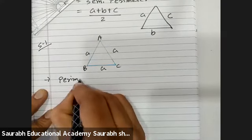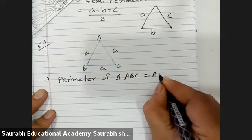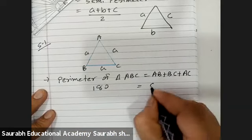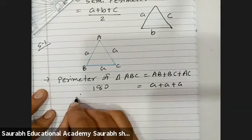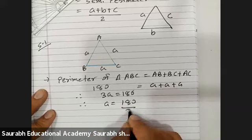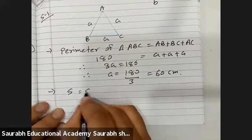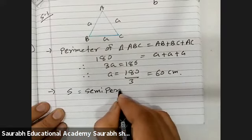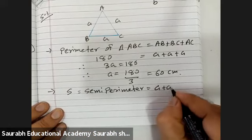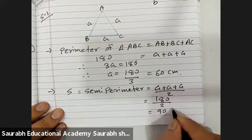Find the area of the sign board using Heron's Formula if the perimeter is 180 cm. Perimeter of triangle ABC equals A plus B plus C. Since all sides are equal, 180 equals 3A, so A equals 180 divided by 3, that is 60 centimetres. Now, semi-perimeter S equals 180 by 2, which is 90 centimetres.